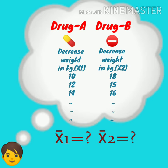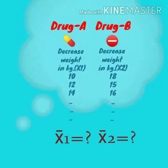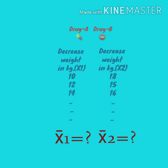The independent samples t-test can only compare the means for two groups — it cannot make comparisons among more than two groups. If you wish to compare means across more than two groups, you will have to apply ANOVA, or Analysis of Variance.